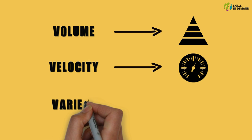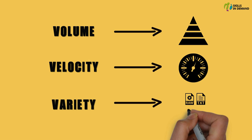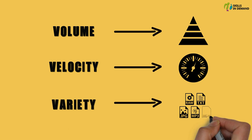And the last one is variety. Variety refers to the different types of data that is getting generated. These are the three important characteristics of big data.